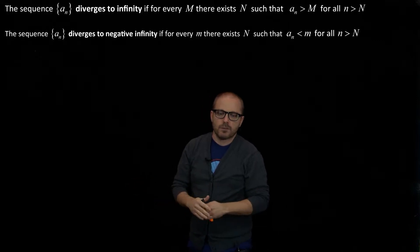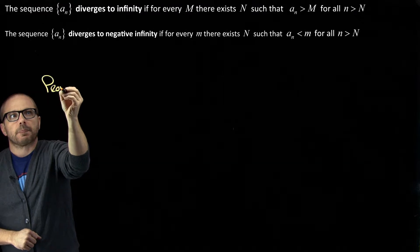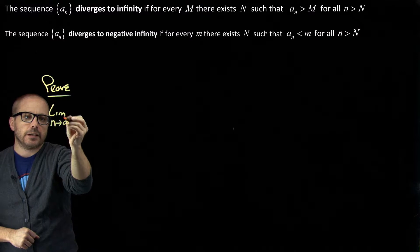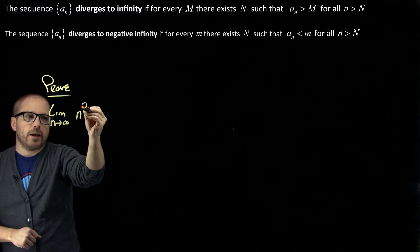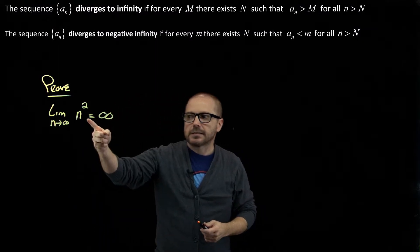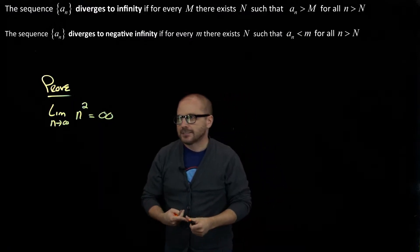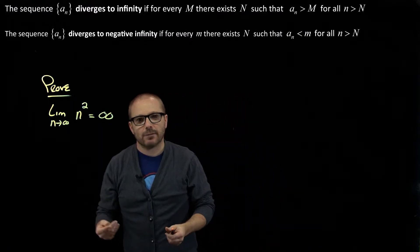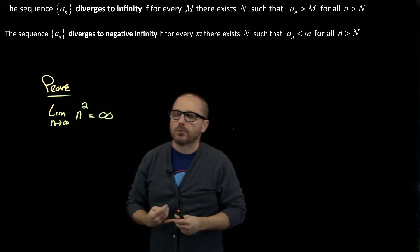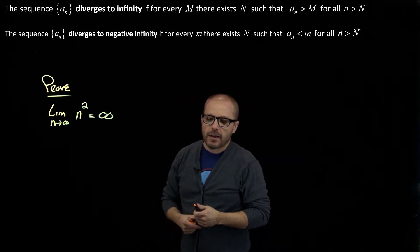I want to do a proof. Let's prove that the limit as N goes to infinity of N² is infinity. This is fairly intuitive — all this is is a list of squares: 1, 4, 9, 16, 25, 36, and so on. Clearly those numbers are just getting larger and larger without bound. We know that intuitively, but let's prove it by the definition.